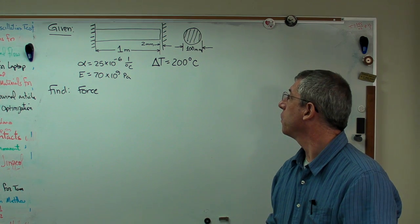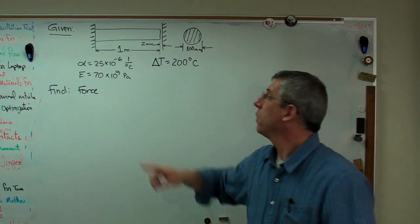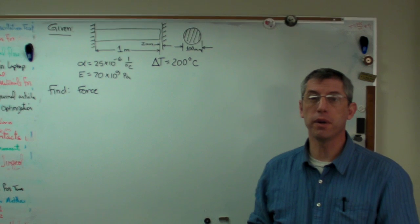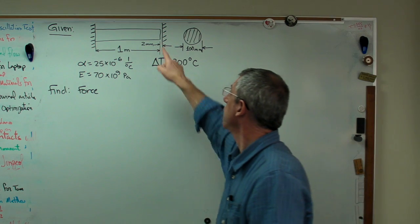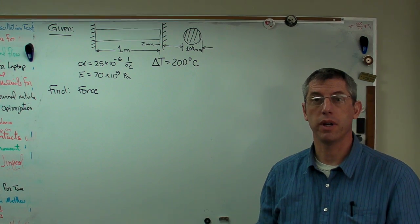And what we're going to want to do now is find out how much force is generated when that bar expands, hits that immovable barrier, and tries to keep expanding. How much force is generated internally between that barrier and the end of that bar wanting to move.